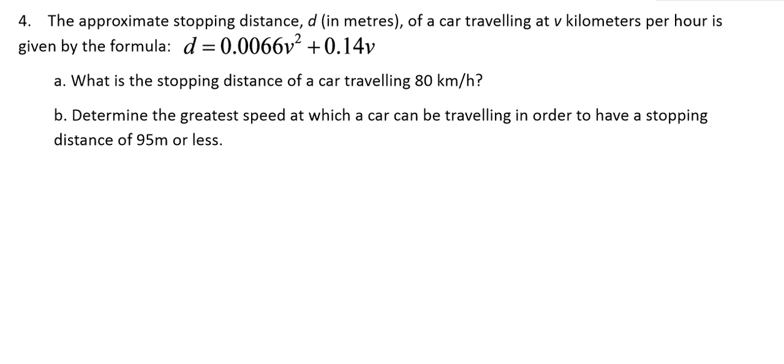Let's look carefully at the formula before we even read what we're supposed to do with it. Let's really understand this formula. Here's the formula. Again, d is the stopping distance of a car, v is the speed in kilometers per hour. It makes sense logically that the faster you're going, the more distance you need to stop your car.